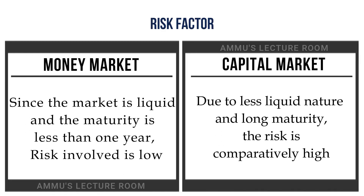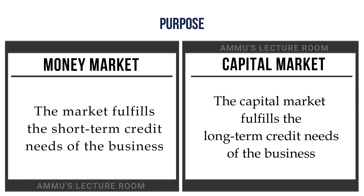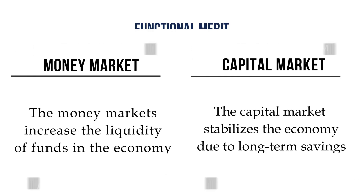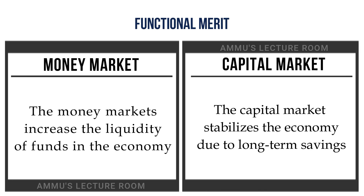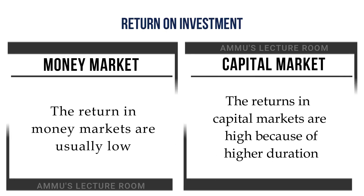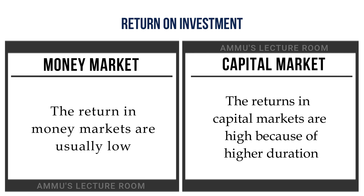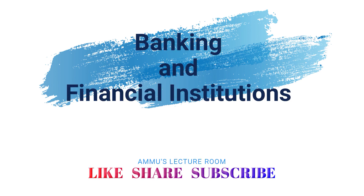Money Market fulfills short-term credit needs, while Capital Market fulfills long-term credit needs for businesses. On a functional merit basis, the Money Market supports liquidity in the economy, while the Capital Market helps raise funds. Money market risk is usually low, whereas capital market risk is high.